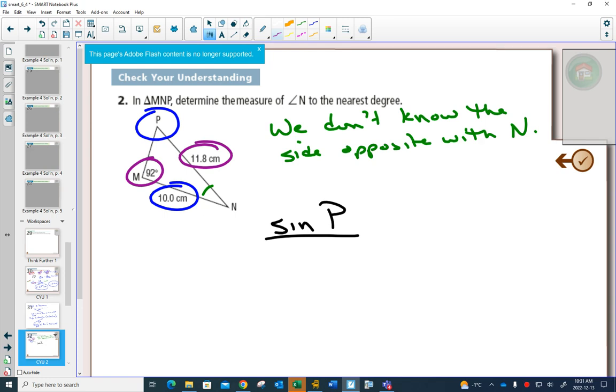Underneath here, which side goes with P would be that, equals then I'll go to the purple ones, and I'd write sine of 92 degrees over 11.8.